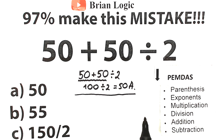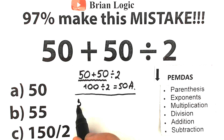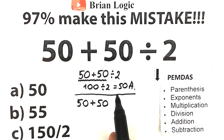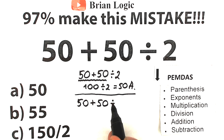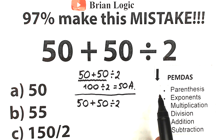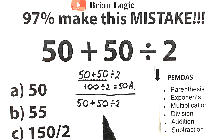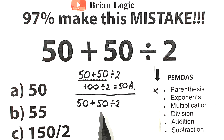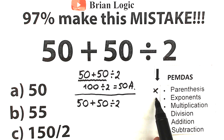Let's rewrite the question: 50 plus 50 divided by 2, and solve it according to the correct order of operations. First, we scan for parentheses — the highest priority — but I don't see any, so we skip that step. Next, exponents: any squares or cubes? No, we don't have any exponents either, so we move to the next step.